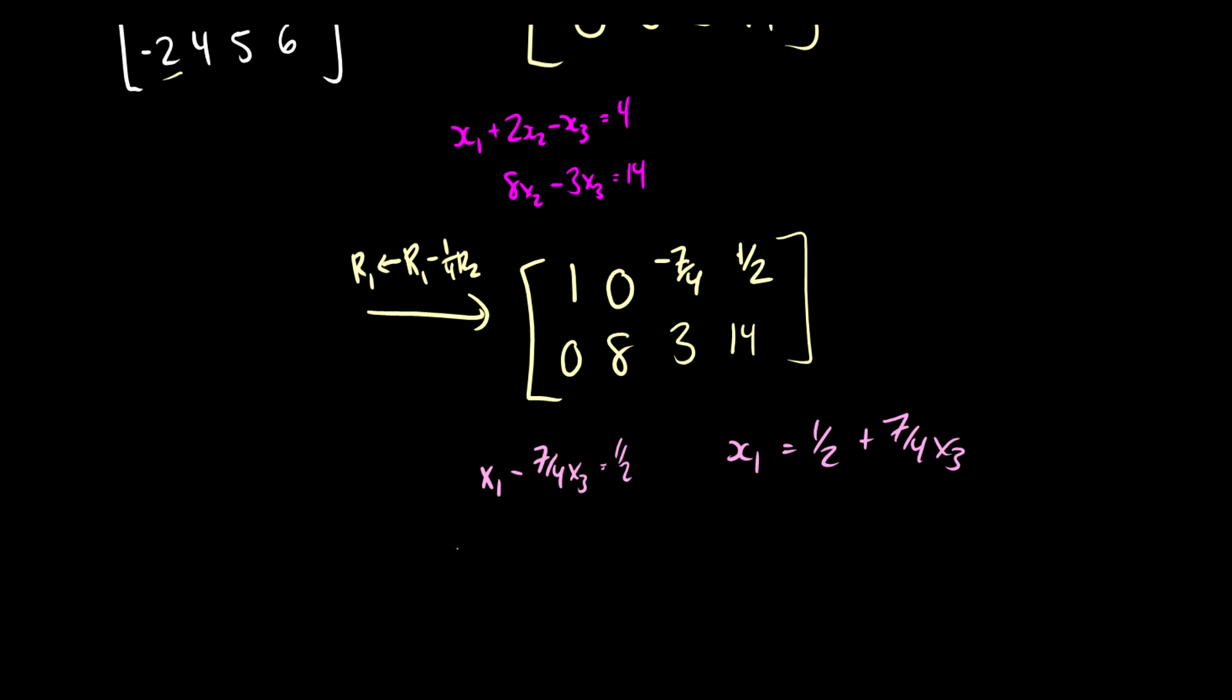We have 8x2 plus 3x3 is equal to 14, which we can rewrite as x2 is equal to 14 over eight minus three eighths x3. And then we have x3 is x3. And that is the solution set to the matrix above.